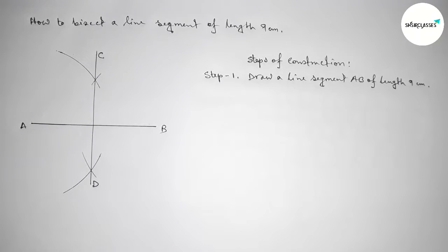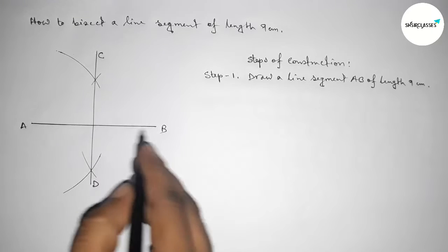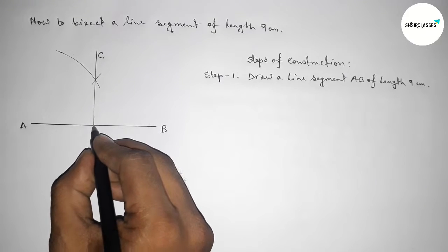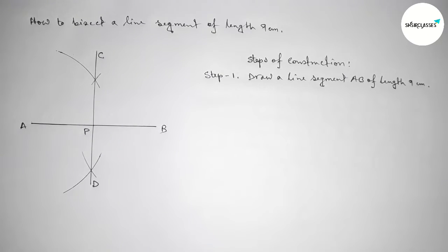C and here D. So the line CD bisects the line AB here at point P.